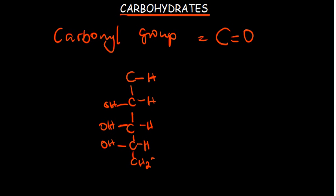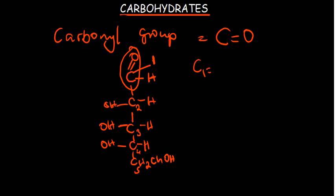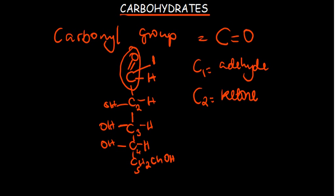Looking at a carbohydrate chain — CH₂, then carbons going down — when you find that the carbonyl group is on carbon number one, we call this an aldehyde group. This is carbon one, carbon two, carbon three, four, and five. When the carbonyl group is on carbon number two, we call it a ketone group.